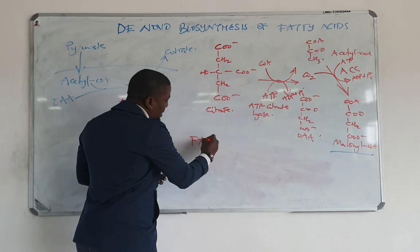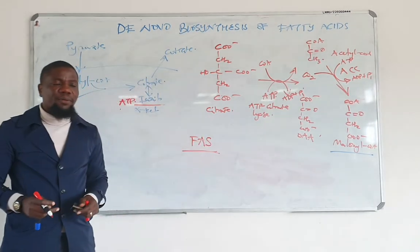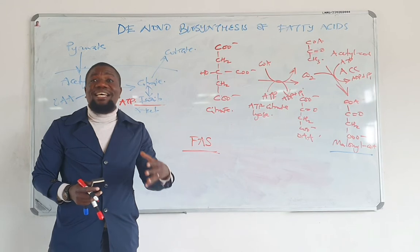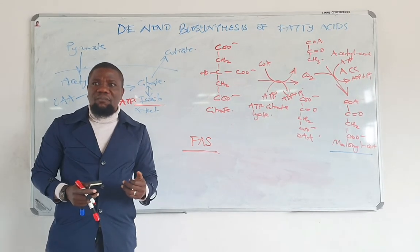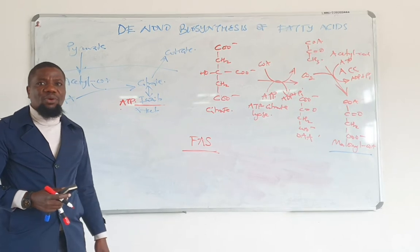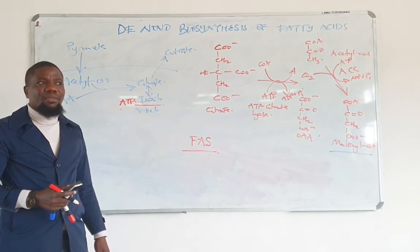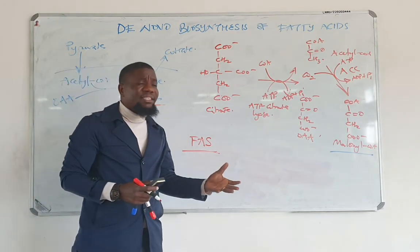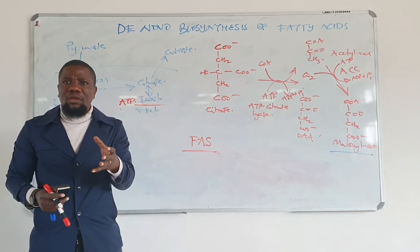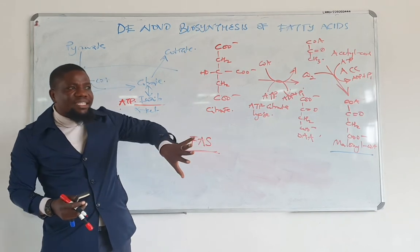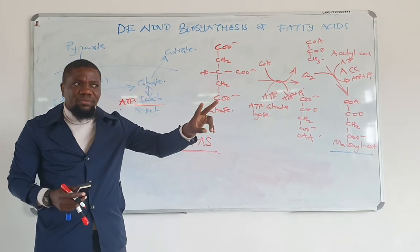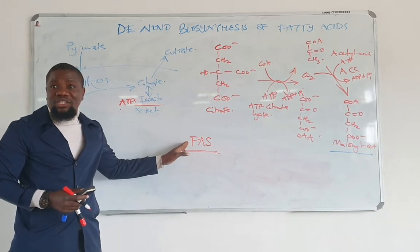Fatty acid synthesis is done by the enzyme called fatty acid synthase. This enzyme is actually a dimer and has seven catalytic activities — meaning it is the same enzyme that catalyzes all seven reactions of fatty acid synthesis. You may have encountered one enzyme with different activities before, such as PFK-2, which also has fructose-2,6-bisphosphatase activity. In the same way, fatty acid synthase performs seven reactions.